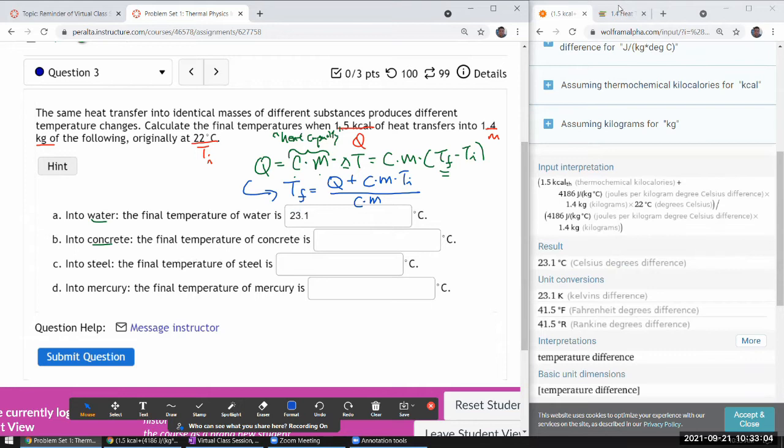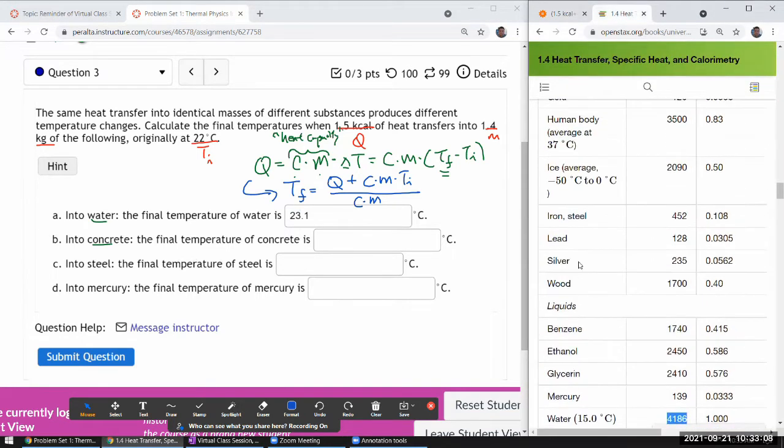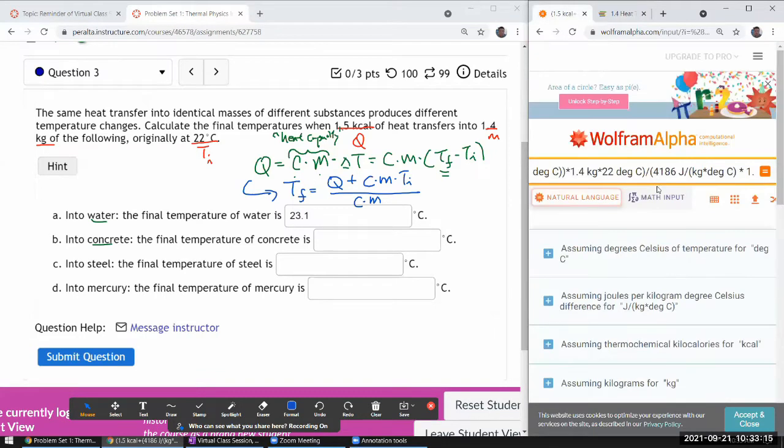For concrete, all right, I got to look it up. Concrete, concrete, that seems right. So I'm going to replace all the instances of water specific capacity with this.